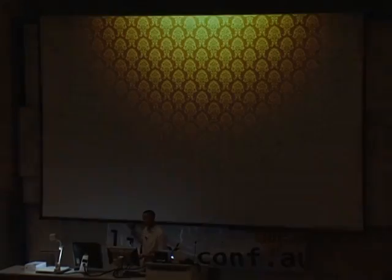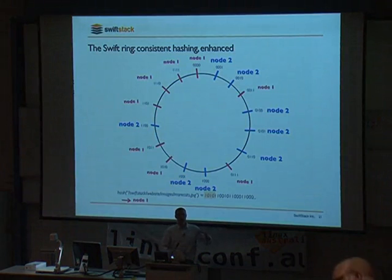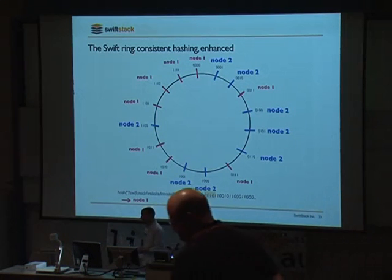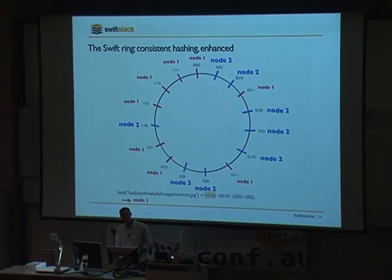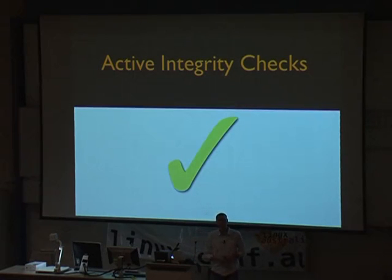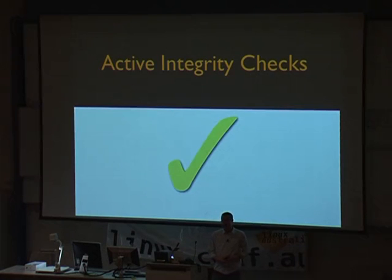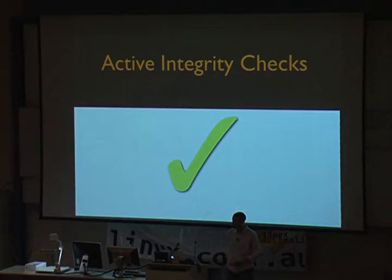Swift does some nice things to ensure your replicas are in distinct availability zones, so you can suffer a failure of a particular rack, DC room, or power supplier. On integrity: we keep checksums of all the data, compare that checksum with what's stored every time data is read off disk to ensure no bit rot. We continually walk the drives to check for file system corruption, and we have replication running in the back end with active checks ensuring drives are still mounted, still valid, and not throwing errors. All of this works together to provide a highly available and reliable system.